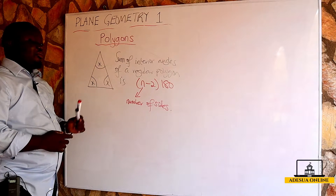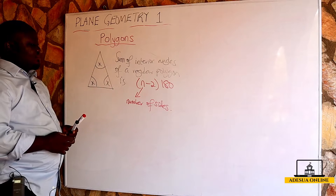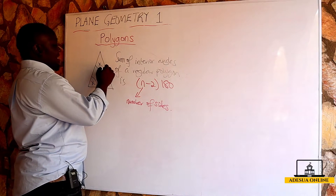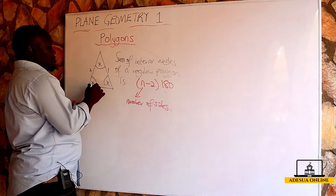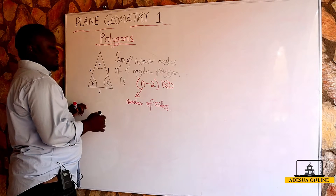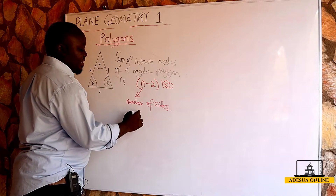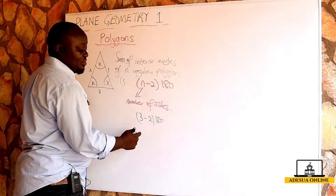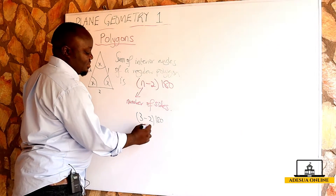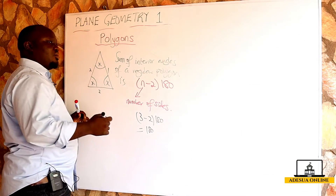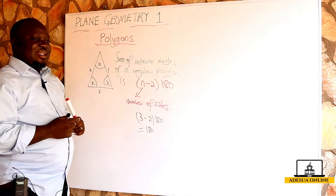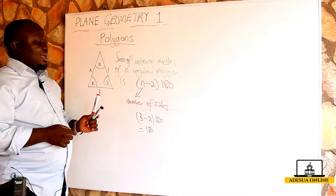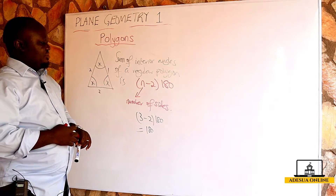So when I pick a triangle and I want to find the sum of interior angles, the number of sides is one, two, and three — so n equals three. It becomes three minus two, multiplied by 180. Three minus two is one, times 180 is 180.